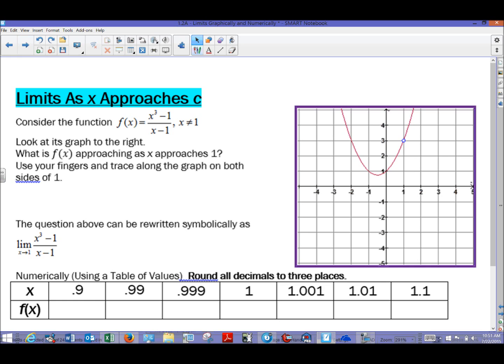First of all, we're going to consider a function. And this function, I will admit is a rather unusual function. It's f of x equaling x cubed minus one over x minus one. Now notice I have this bit of a disclaimer here that says, well wait a minute, x can't be one.